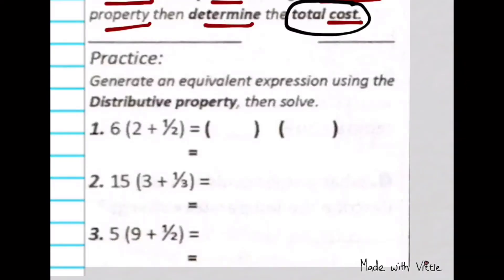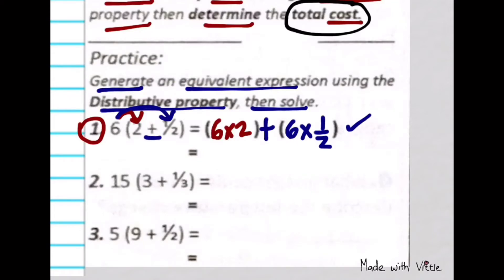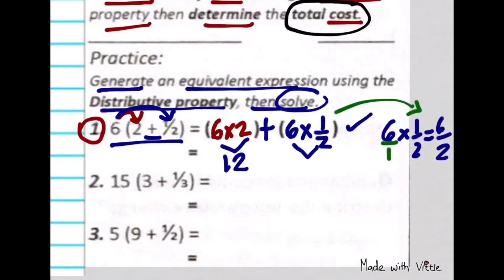Let's do more practice using distributive property: 6 times (2 + 1/2). This is an expression equivalent to the given expression. Let's solve it — multiply first. 6 times 1/2 is just like getting half of 6. Then the last thing to do is add.